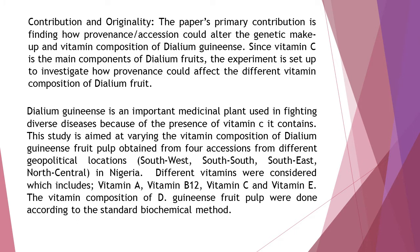The paper's primary contribution is finding how provenance and accession could alter the genetic makeup and vitamin composition of Dialium guineense. Since vitamin C is the main component of Dialium fruits, the experiment is set up to investigate how provenance could affect the different vitamin composition of Dialium fruit. Dialium guineense is an important medicinal plant used in fighting diverse diseases because of the presence of vitamin C it contains.